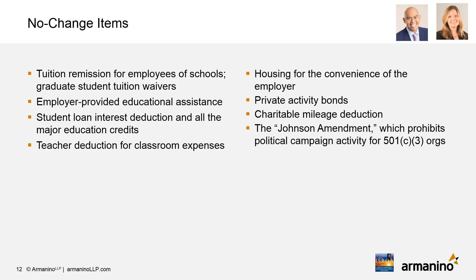The Section 127 provision for the non-taxability of certain employer educational assistance payments to employees remains intact. The student loan interest deduction and all major education credits remained untouched. Housing for the convenience of the employer remains non-taxable to employees — it must be a condition of employment, for the convenience of the employer, and on-site or within a mile of the employer's campus.